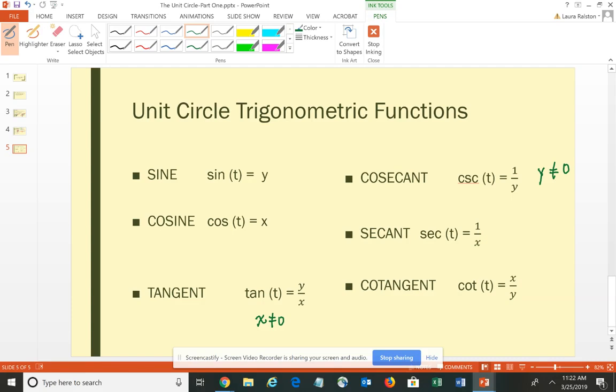Similarly for the secant, which is the reciprocal of cosine, we flip over the x so that we have 1 over x is equal to the secant of T. And again, we need the little restriction that x cannot be 0 because you can't have 0 in the denominator of a fraction. And then cotangent is the reciprocal of the tangent, so we flip it over and it becomes x over y, which is the cotangent of T. And again, we do have to have the restriction that y cannot be 0.